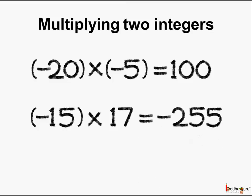15 multiplied by 17 is 255, and we put the negative sign here. So the answer here is minus 255.